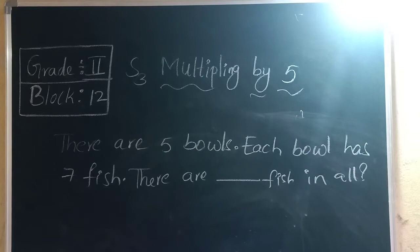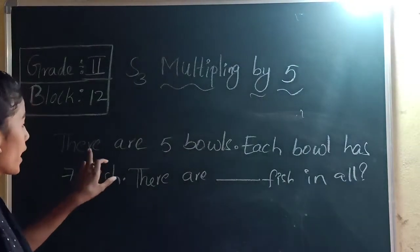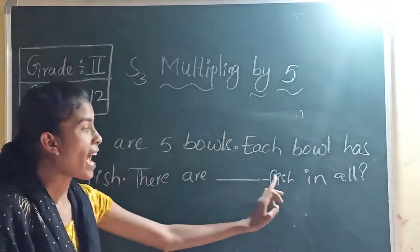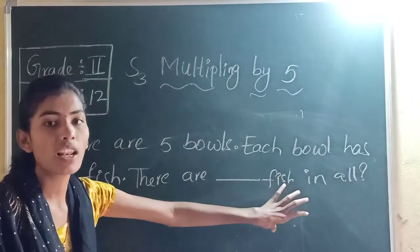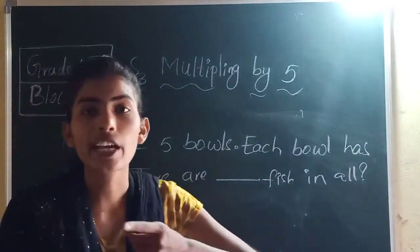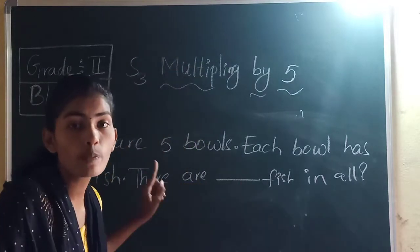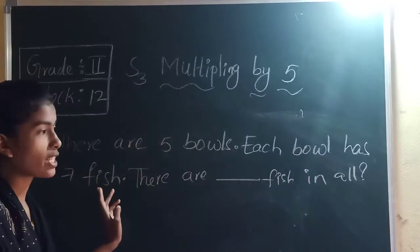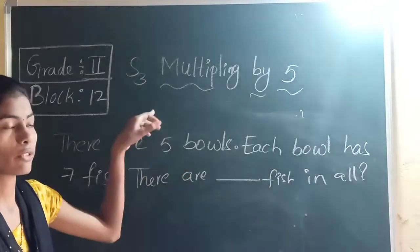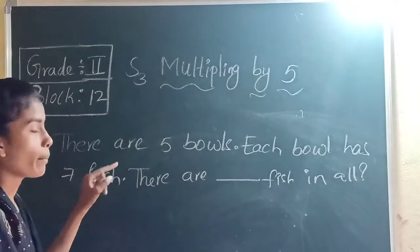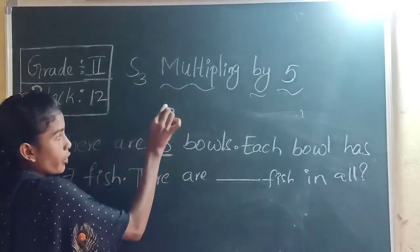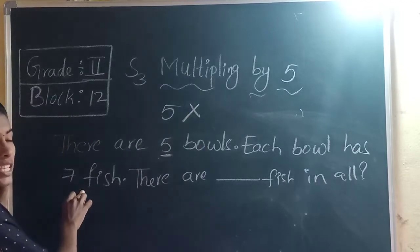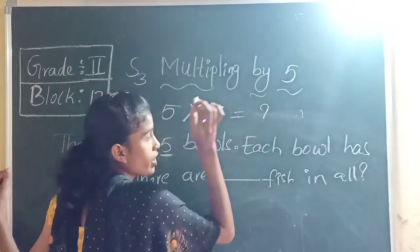Now here is a problem on the board: there are 5 bowls, each bowl has 7 fish, how many fish are there in all? You have to find the multiplication sentence first. Bowls represent groups and fish represent each group. So the sentence is 5 groups into 7. That means 5 into 7.